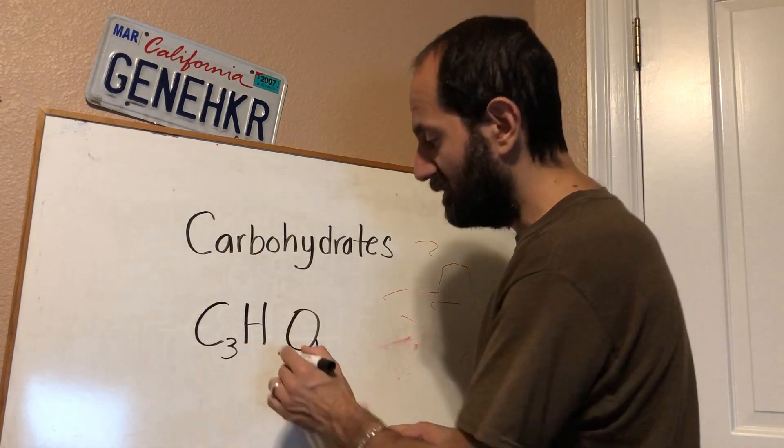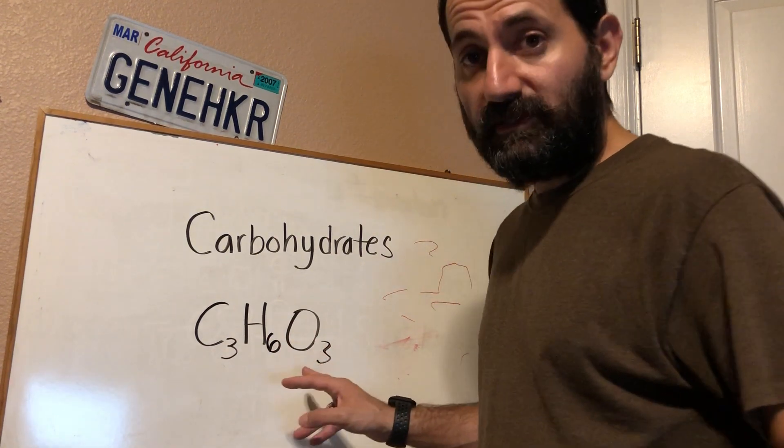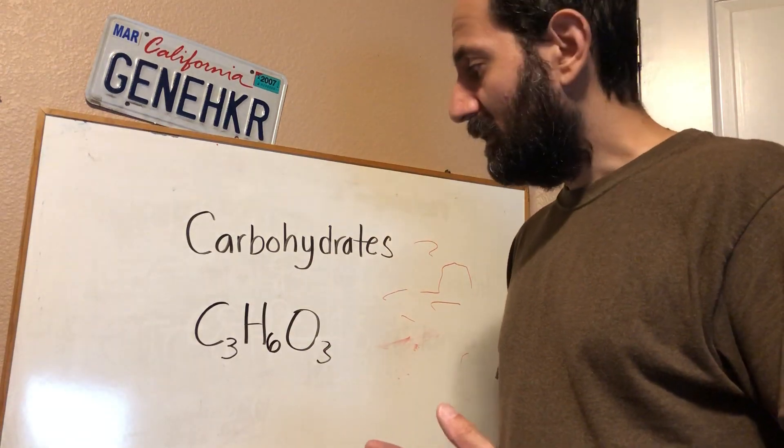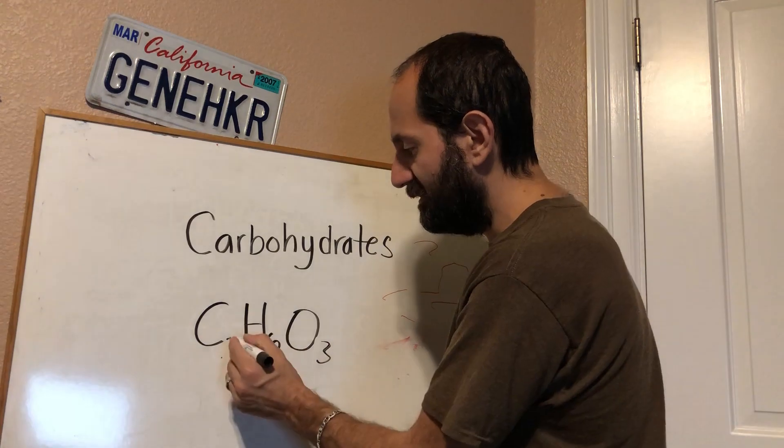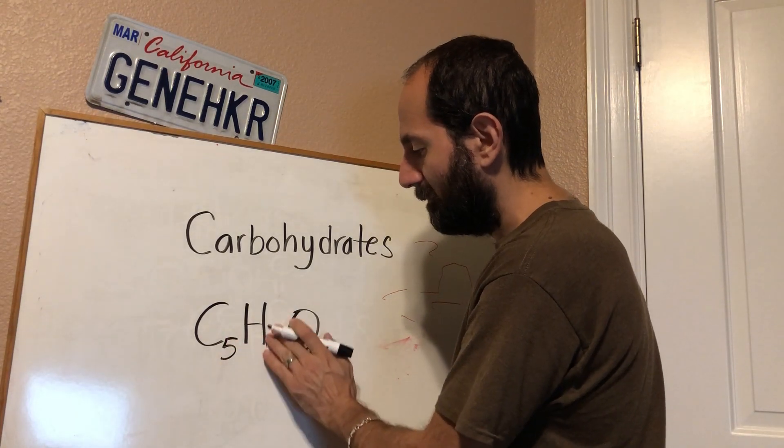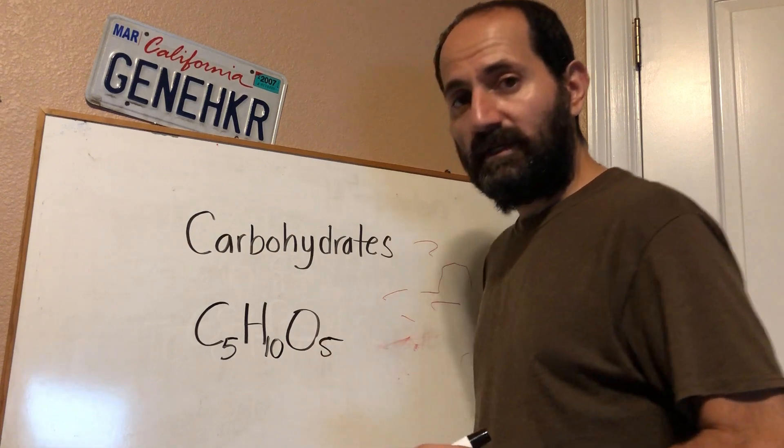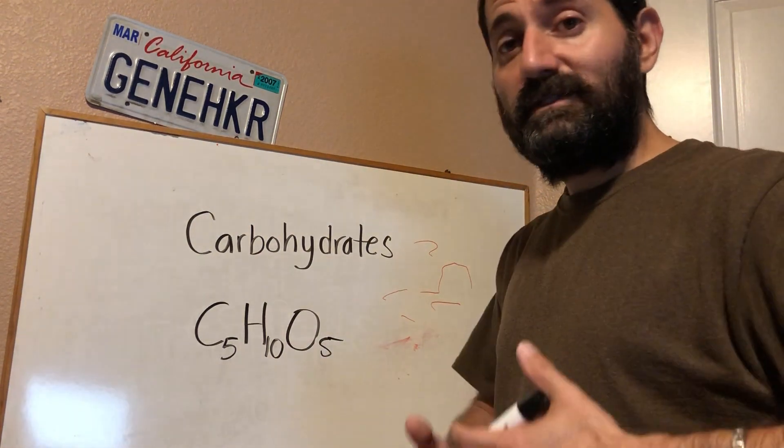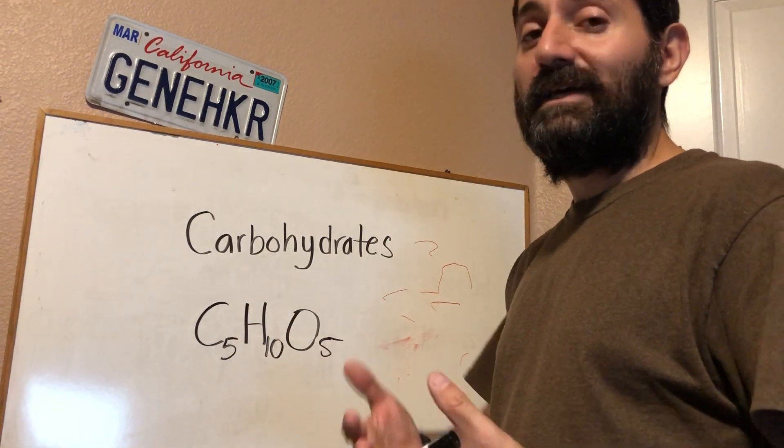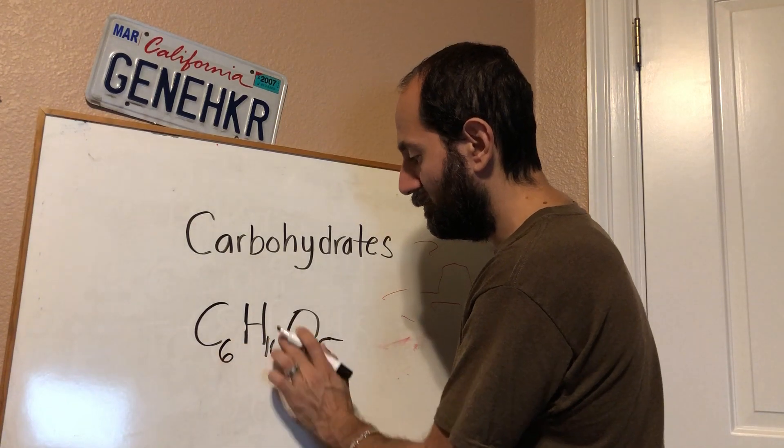That would be glyceraldehyde. There are five carbon sugars, so that would be C5H10O5. That's ribose, for instance. And then there are many different size sugars like I said. You can have a six carbon sugar that would be C6H12O6.